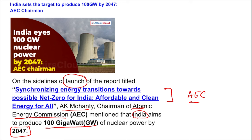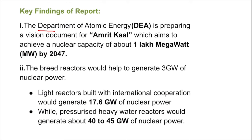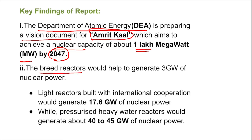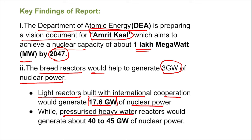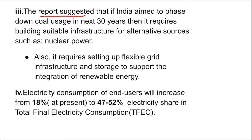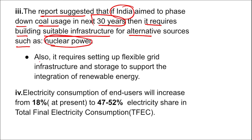AK Mohatti — that stands for Ajit Kumar Mohatti — mentioned that India aims to produce 100 gigawatts of nuclear energy by 2047. The Department of Atomic Energy is preparing a vision document for Amrit Kaal that aims to achieve nuclear capacity of about one lakh megawatt by 2047. Breeder reactors would help generate 3 GW, light reactors built with international cooperation would generate around 17.6 GW, and pressurized heavy water reactors would generate about 40 to 45 GW of nuclear power.